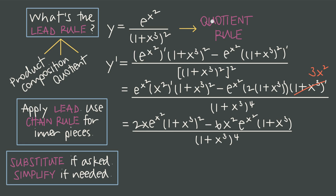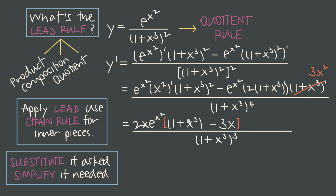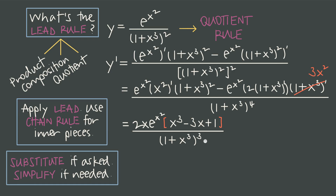Now we have our derivative. We identified the lead rule as quotient rule, applied that lead rule, and used chain rule for the inner pieces. We weren't asked to substitute a specific value, so all that's left is to simplify. We notice we have 1 plus x cubed squared in the numerator, 1 plus x cubed to the first power, and 1 plus x cubed to the fourth power in the denominator. We can cancel one factor from each, removing the squared factor completely and leaving one factor in the numerator and three in the denominator. From the numerator, 2x e to the x squared and 6x squared e to the x squared share a common factor of 2x e to the x squared, which we factor out. This leaves 1 plus x cubed minus 3x, and reordering descending gives us x cubed minus 3x plus 1, yielding the final simplified derivative.